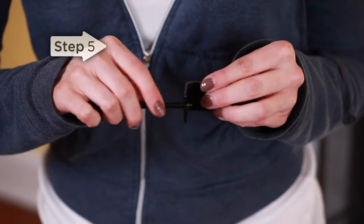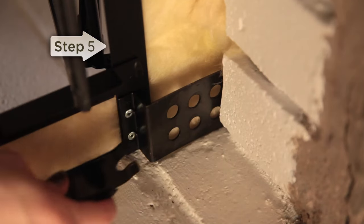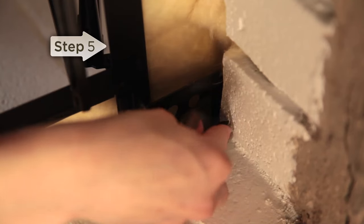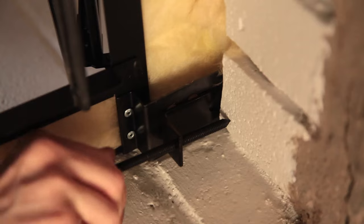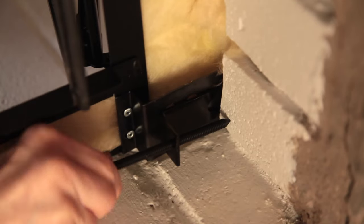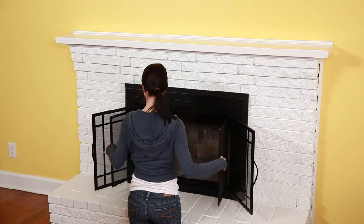Insert the 1/4-20 by 3-1/2-inch thumb screw into the pressure bracket. Then insert the pressure bracket into the pair of holes closest to the side of the fireplace opening, making sure the thumb screw is pointing towards the side wall of the fireplace. Tighten the thumb screw into the wall. Repeat this on the opposite end and you're done.